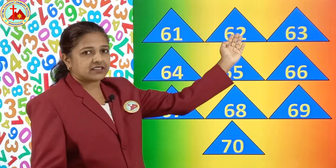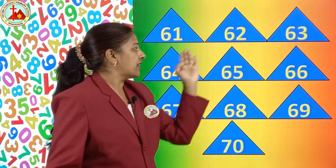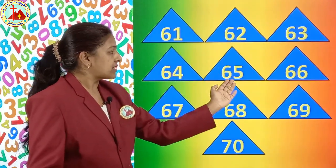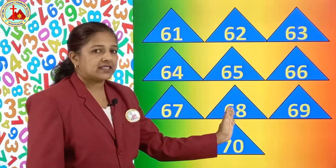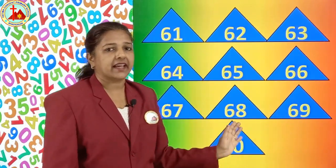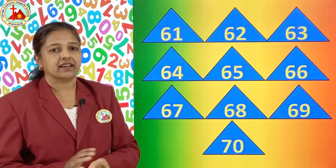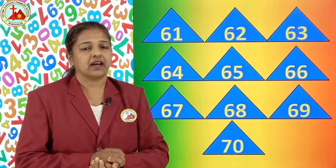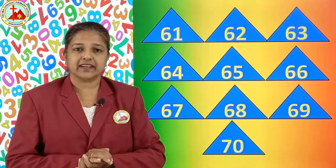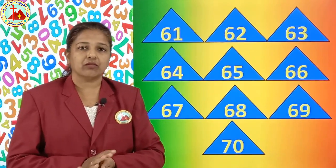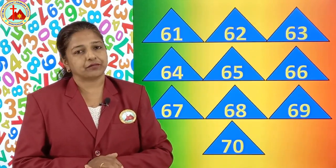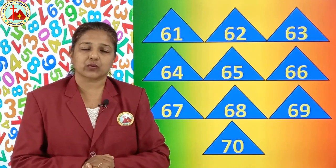61, 62, 63, 64, 65, 66, 67, 68, 69 and 70. Now, we will learn how to write 61 to, now we will learn to write 51 to 70 in the square line book.